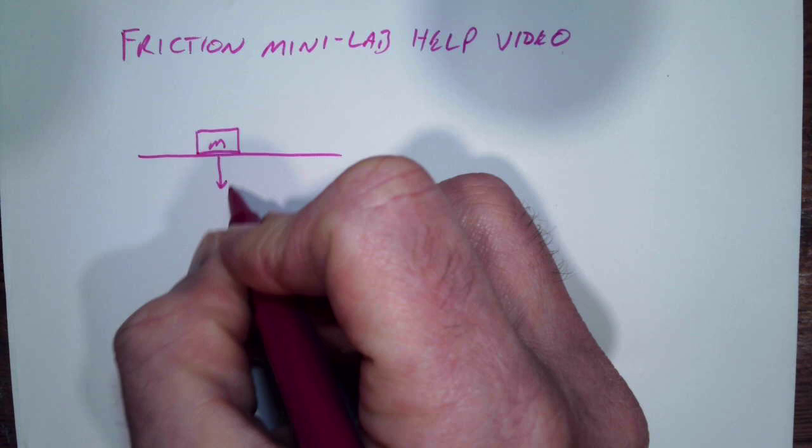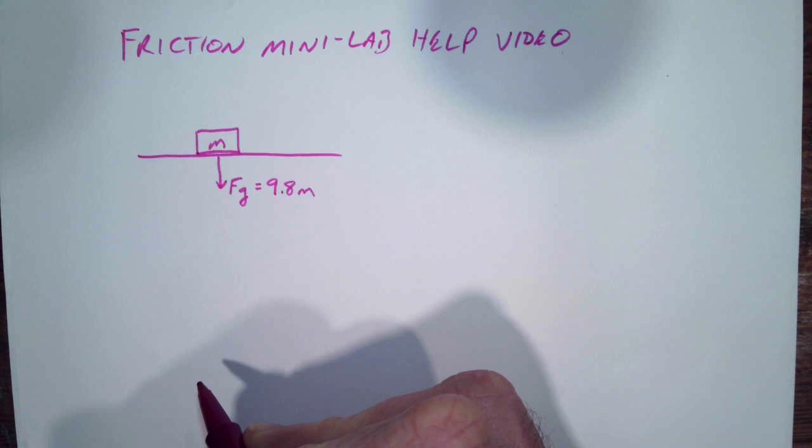Remember that the force of gravity we can always find by doing 9.8 times the mass, and if we don't know the mass you just let the m come along for the ride.